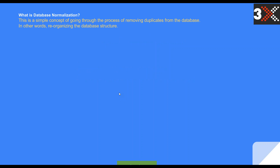What is database normalization? This is a simple concept of going through the process of removing duplicates from the database — in other words, reorganizing the database structure, meaning the tables. We need to watch out for redundancy and data duplication because this is exactly what we're trying to remove from database tables. We don't want redundant data — data that is sitting there doing nothing — or data that has been duplicated, where we have an existing copy of the data and the same copy again.